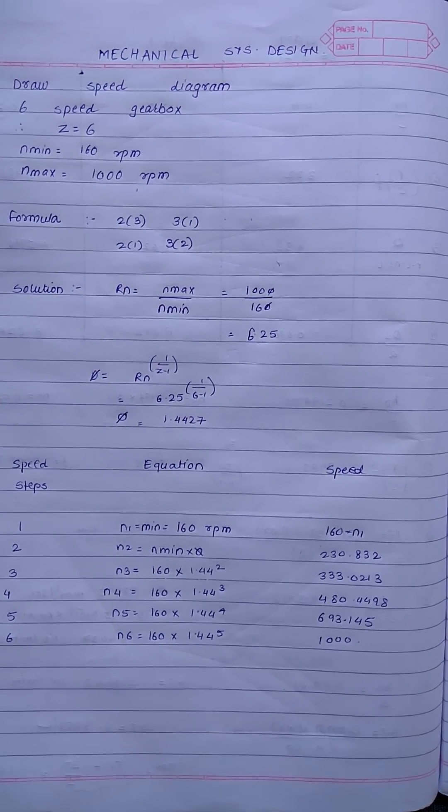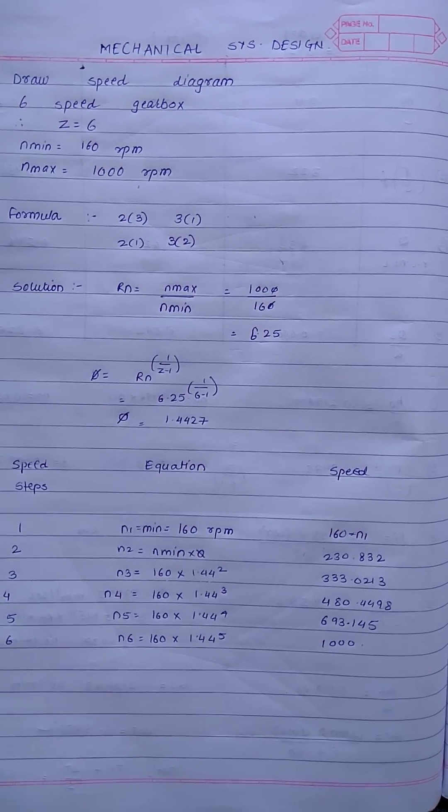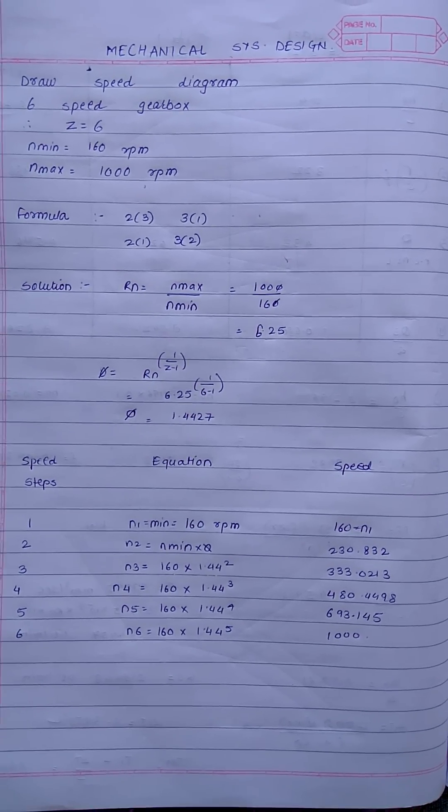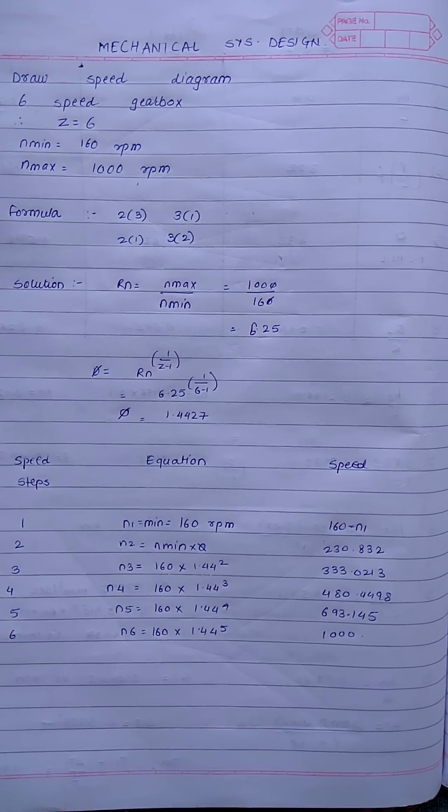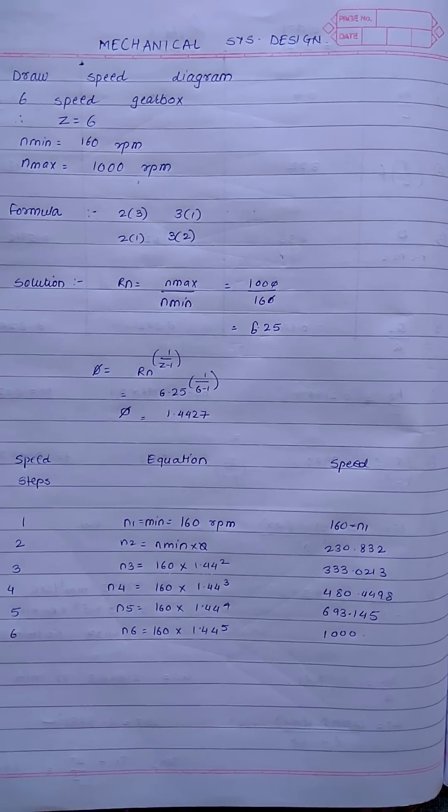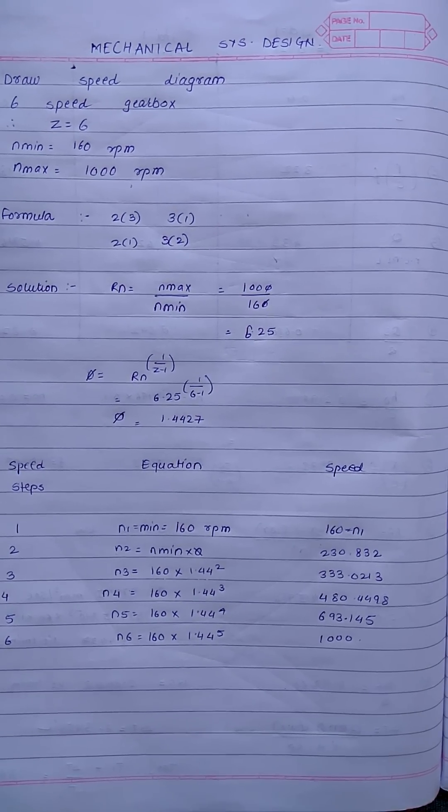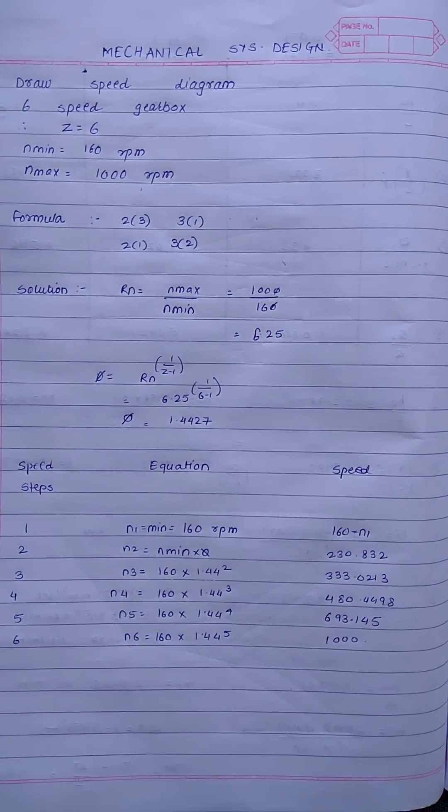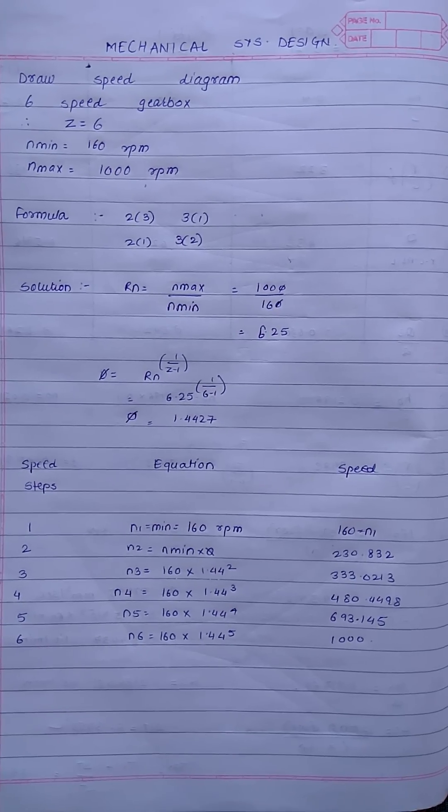n1 is 160 rpm, n2 is n minimum times phi, that is 230.832. For the 3rd speed n3, we take n minimum times phi square. For n4, we take n minimum times phi cube, and in similar fashion we go till the 6th speed n6, and we get n6 as 1000.